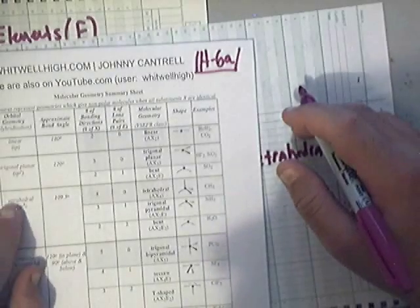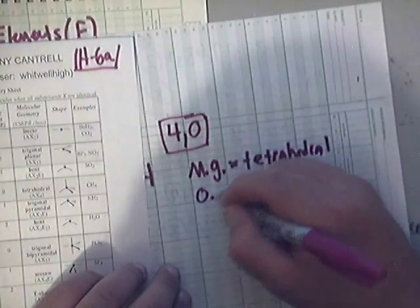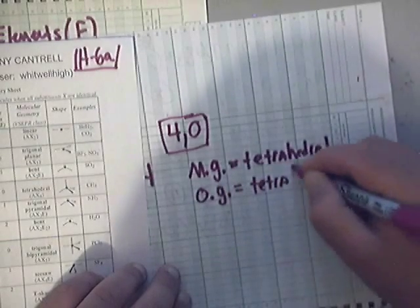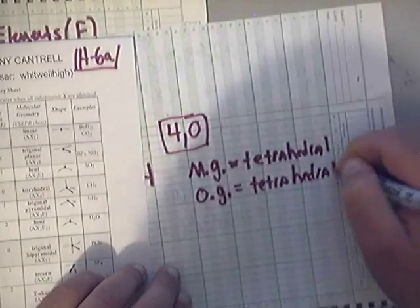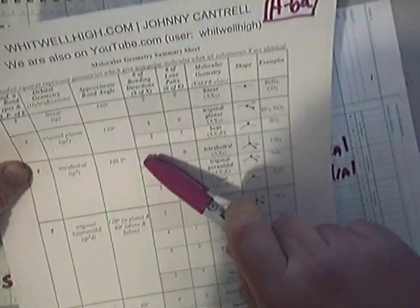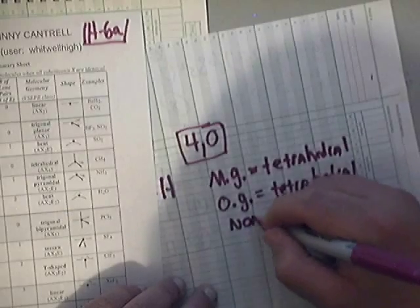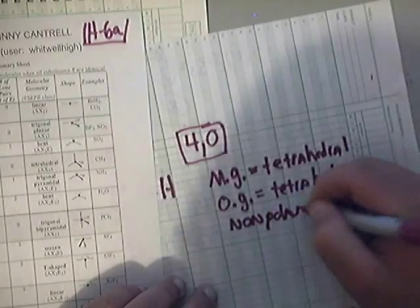The orbital geometry, notice that it is tetrahedral. Notice that we need to next get the polarity, if it's polar or nonpolar. Notice here that it is shade in a light gray. That means it's nonpolar. So this one is nonpolar.